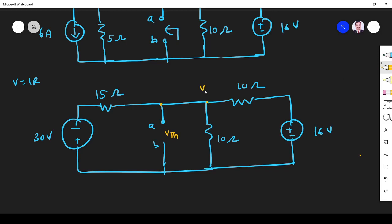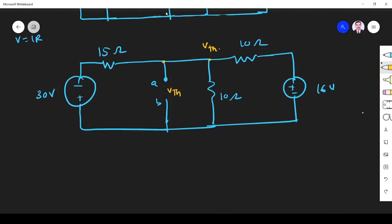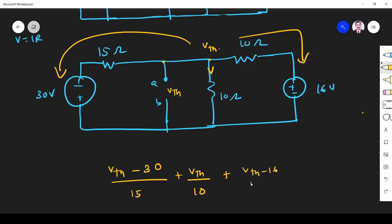So here it is V Thevenin. V Thevenin means here also it is V Thevenin. So V Thevenin, I apply KCL. So for this branch, nodal analysis. As per nodal analysis, for this branch: V Thevenin minus 30 divided by 15. Then for this branch: V Thevenin by 10 plus for this branch: V Thevenin minus 16 divided by 10 equals zero.